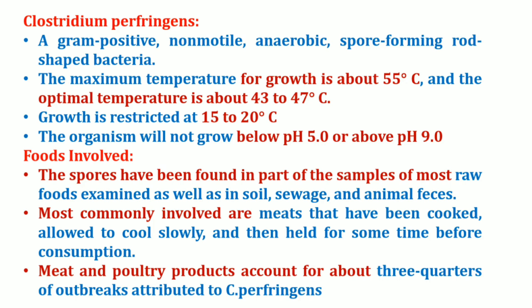Clostridium perfringens is a gram-positive, non-motile, anaerobic spore-forming rod-shaped bacteria. The maximum temperature for its growth is 55°C and the optimal temperature is 43 to 47°C. Growth is mainly restricted to 15 to 20°C, and the organism cannot grow below pH 5 or above pH 9. The spores have been found in samples of most raw foods, as well as in soil, sewage, and animal feces. Most commonly involved are meats that have been cooked, allowed to cool slowly, and held for some time before consumption. Meat and poultry products account for about three-quarters of outbreaks attributed to Clostridium perfringens.